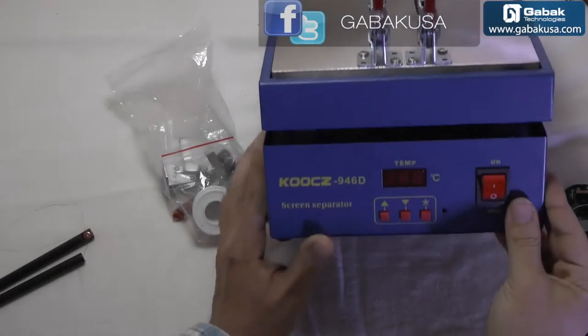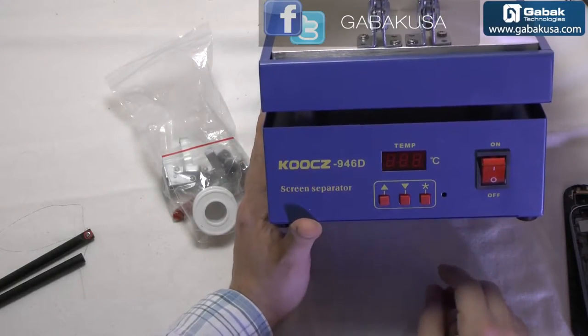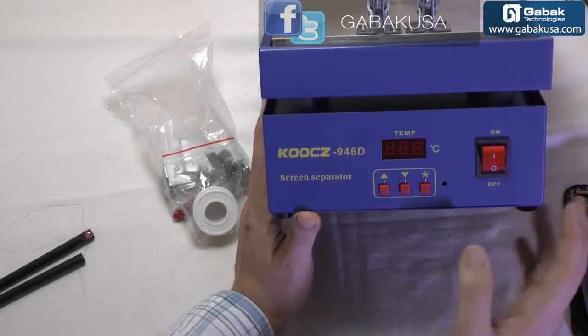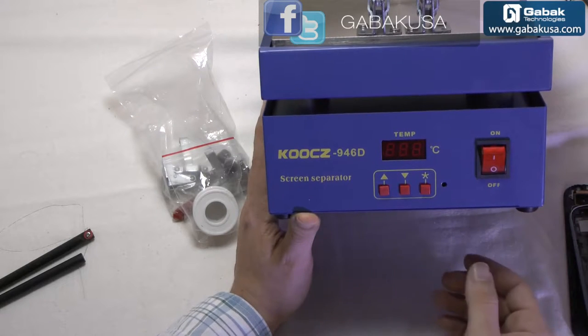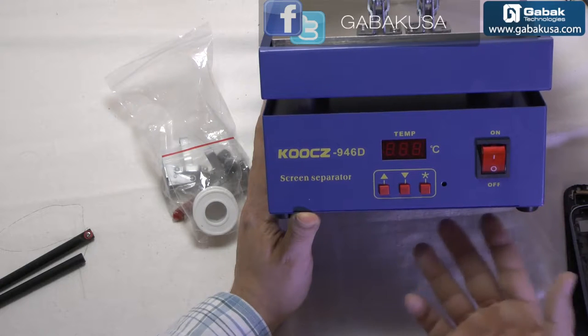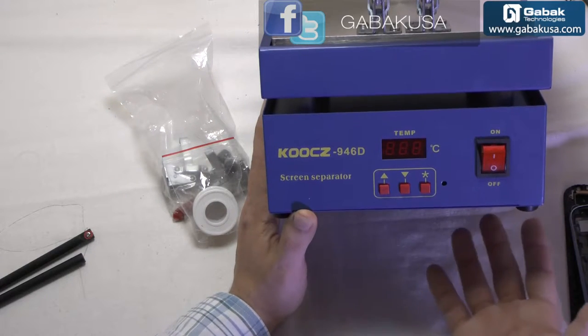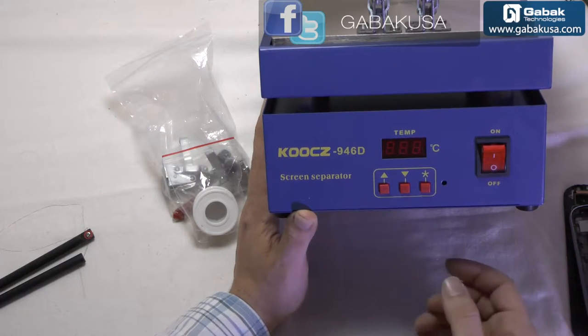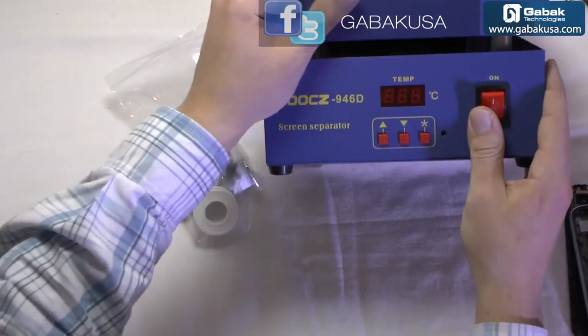In this video I'll show you this hot plate LCD separator. You will find this device on eBay or Amazon and if you want to fix cellphones this is a good tool to have. We will make a little review and I will tell you my opinion about this device and how it works.